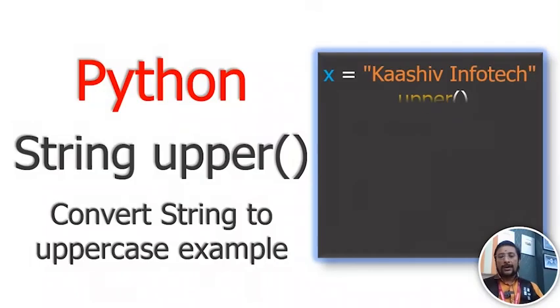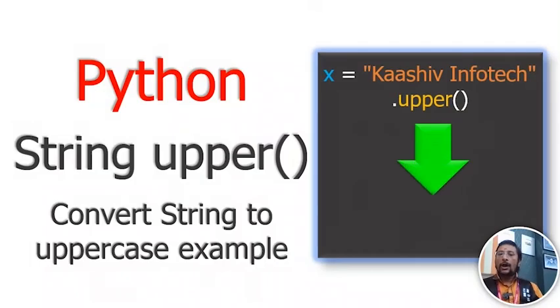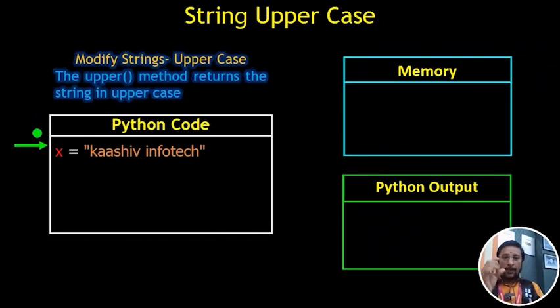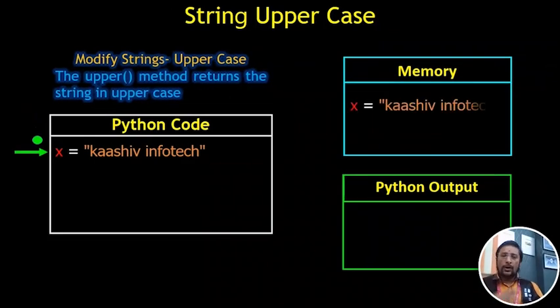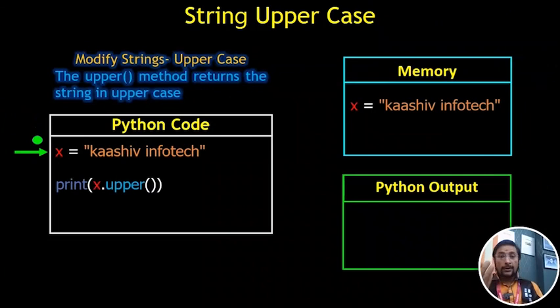Now, there is an upper method. What is the upper method? It converts letters to capital letters. If you type in a small letter, it will convert it to a capital letter on your computer.